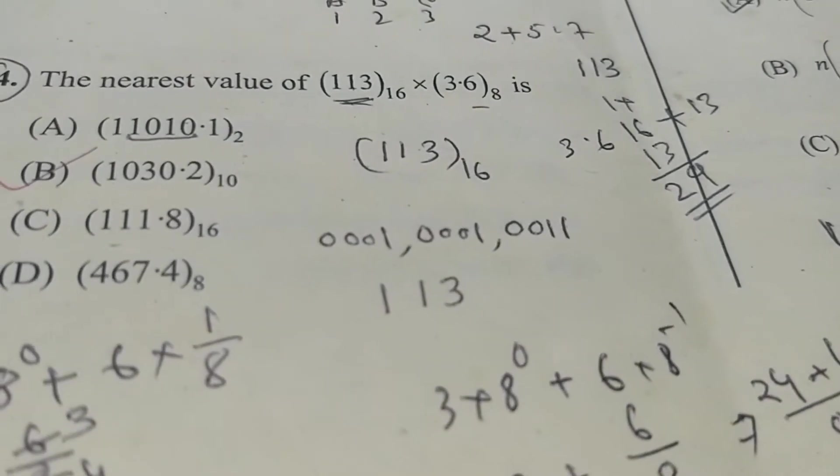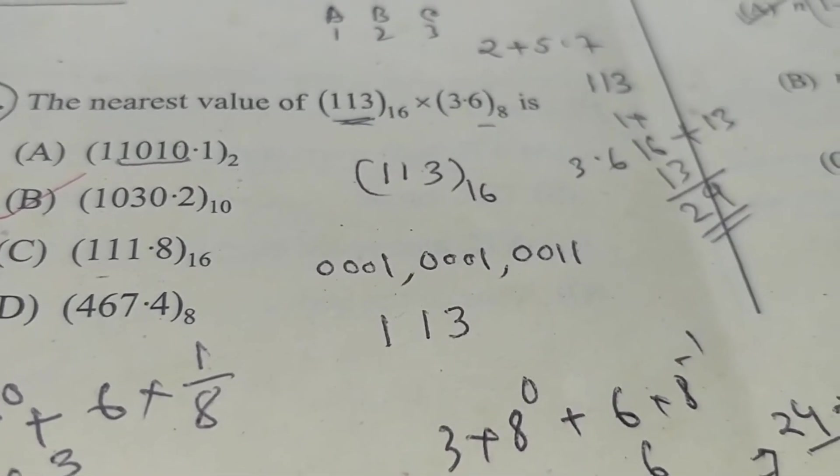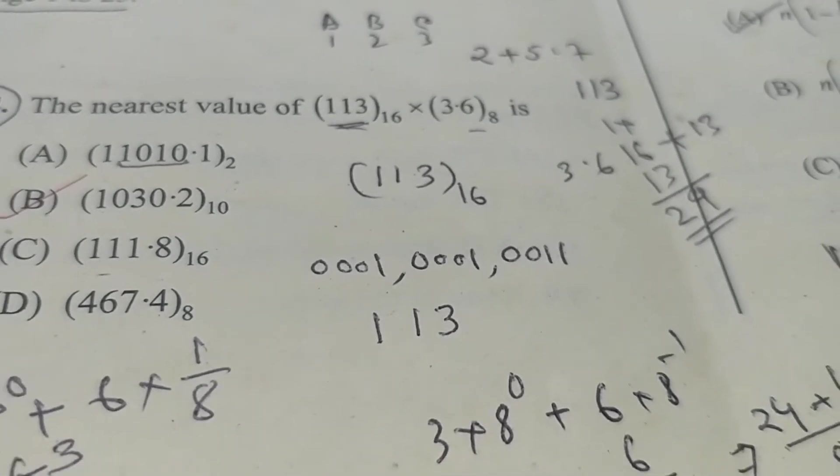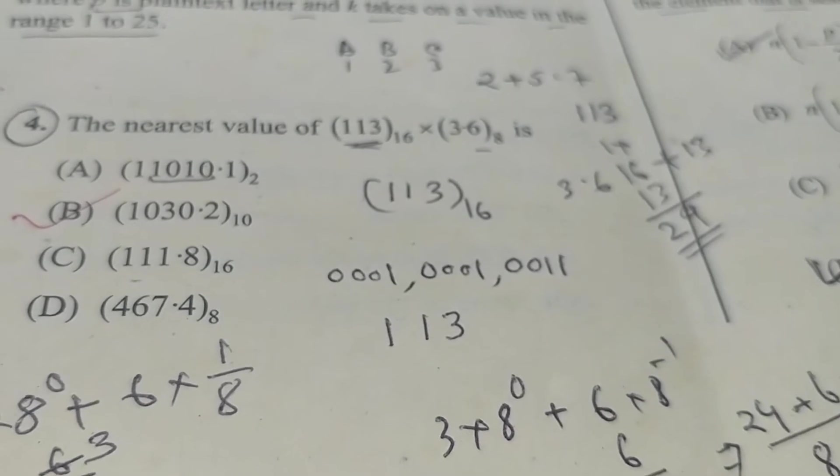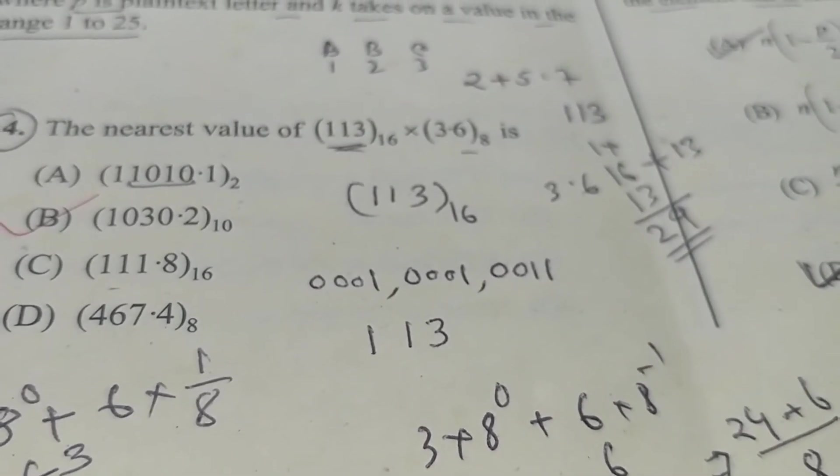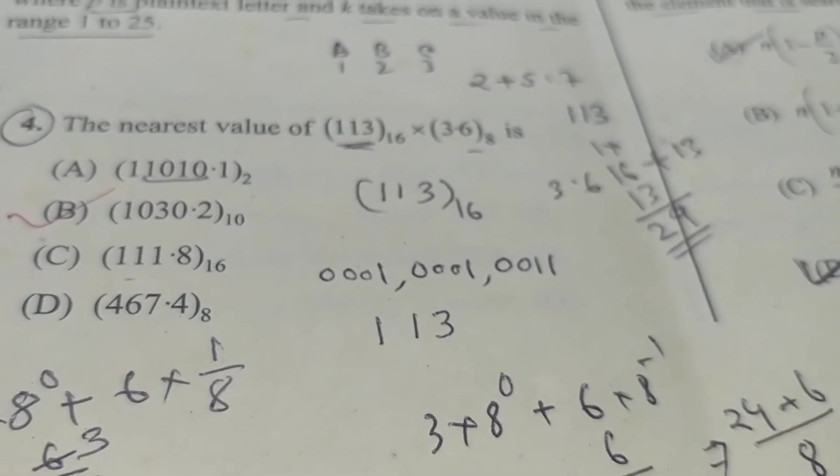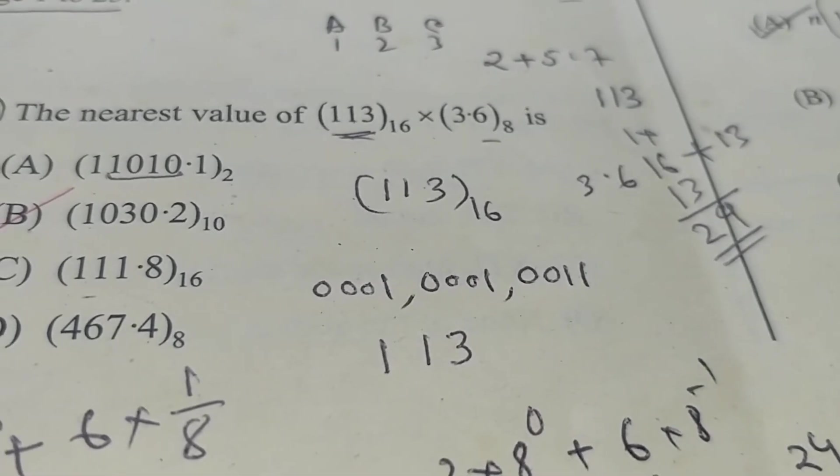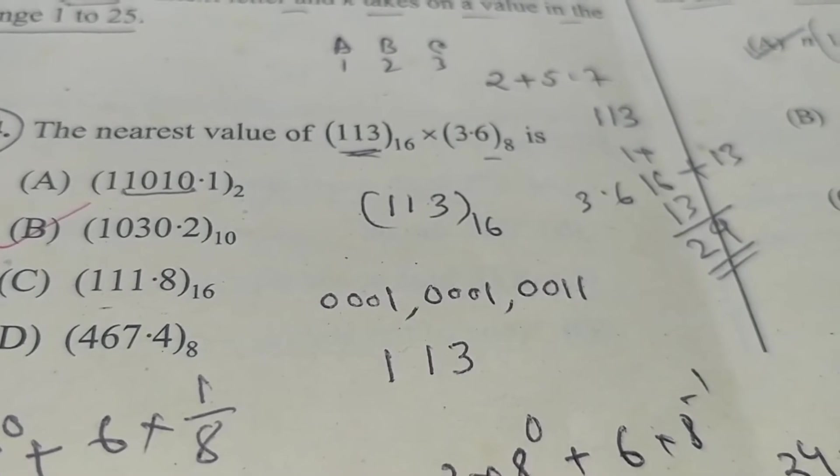Now next question four: the nearest value of 113 base 6 into 3.6 in octal. So first we convert this to different base number in decimal and perform the normal decimal multiplication and the result will be 1031.25 and here mentioned that the nearest value. So B is correct: 1030.2 in decimal.